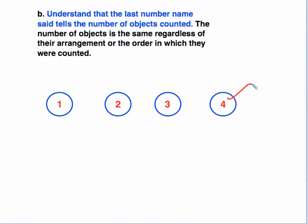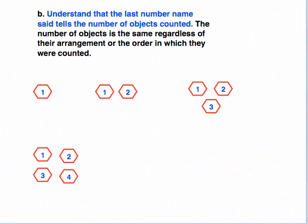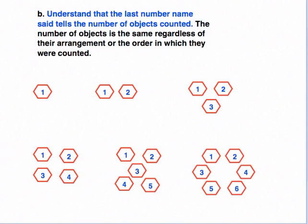One strategy to address this is to present separate sets instead of just changing one set. Show a set of 1, then a separate set of 2, then 3 — so students can see that the last number counted is the total quantity in that set. Continue with sets of 4, 5, and 6. Students can make comparisons across sets and realize that the last number they count is the total quantity in that group.